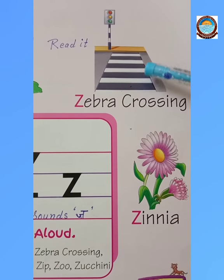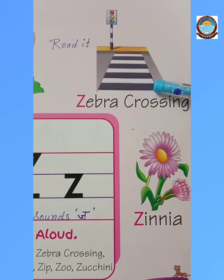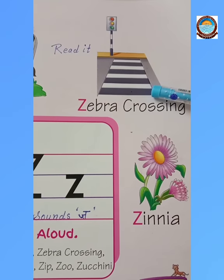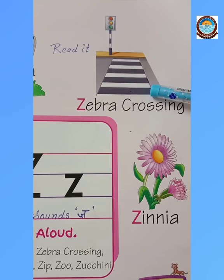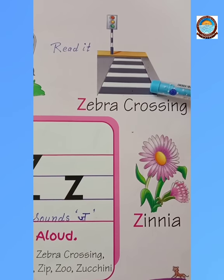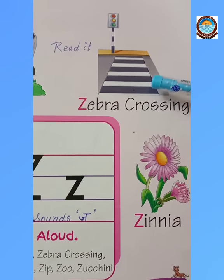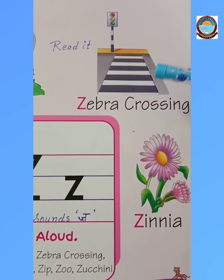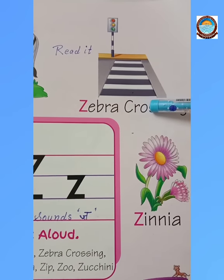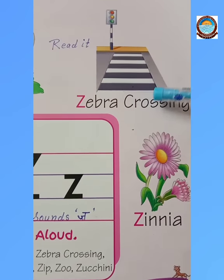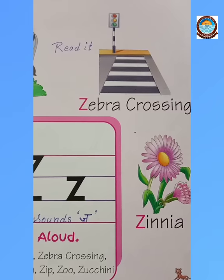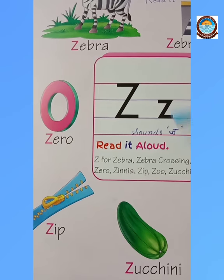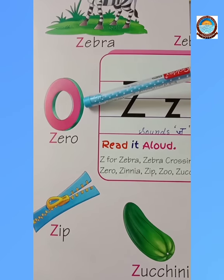Bachyo, sadak par jo kaali aur safed rang ki patiyaan bani hoti hain, unhein hum zebra crossing kehte hain. Jab hum sadak cross karte hain to hume zebra crossing ke upar se hi chalna chahiye.